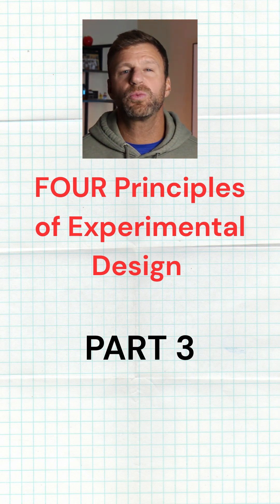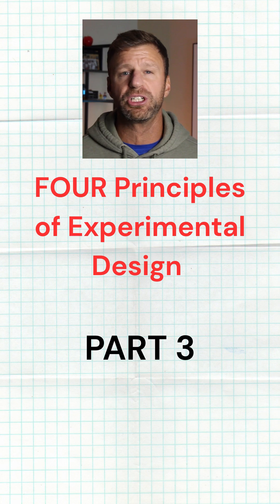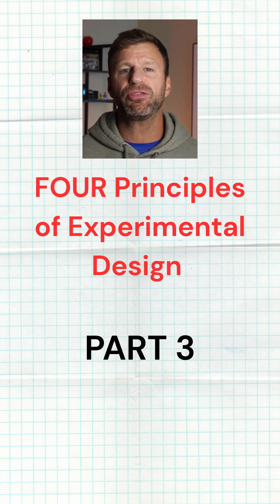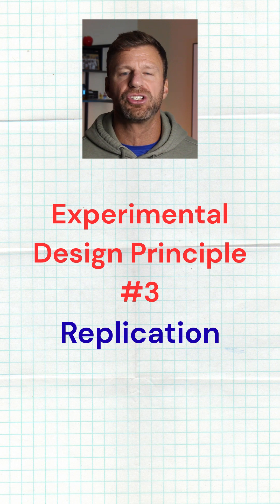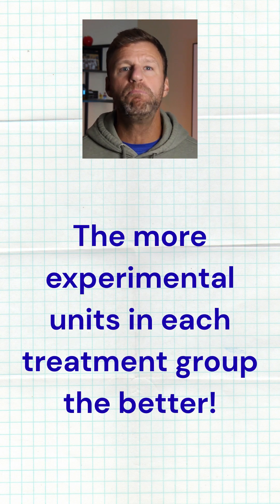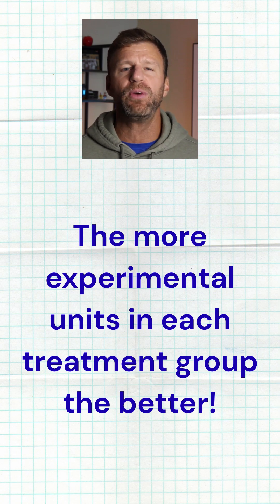When it comes to experimental design, there are four huge pillars or principles that make a good, well-designed experiment. The third of those pillars is replication. Basically, replication means that we want as many experimental units in each treatment group as possible, because the more, the better.